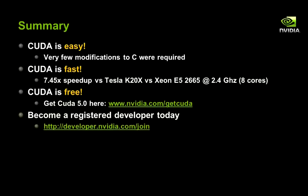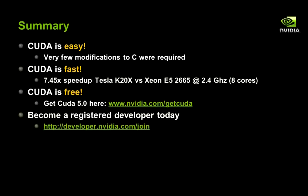In summary, CUDA is easy. We had to make very few modifications to the original C code — namely, we had to put in the __global__ keyword and change it so we no longer have a loop, but instead have a unique index calculation. CUDA is also very fast. It achieved a 7.45x speedup versus a Xeon E5-2665 at 2.4 gigahertz.